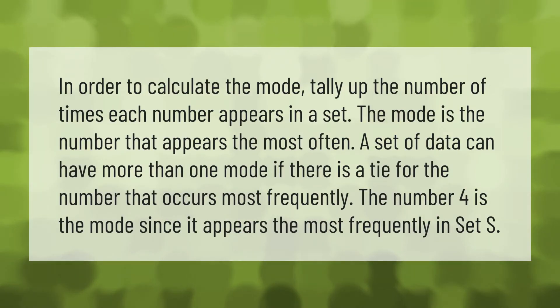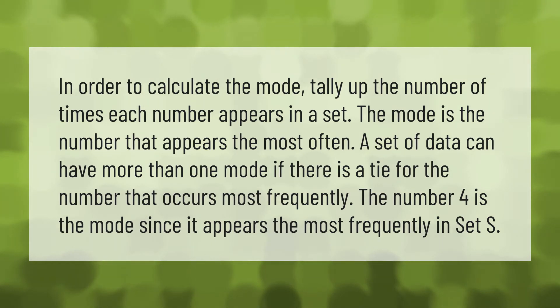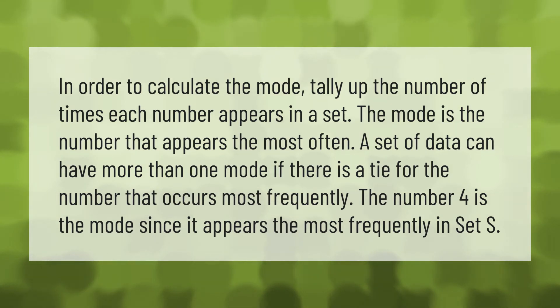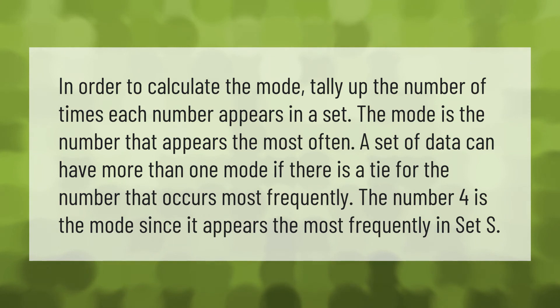To calculate the mode, tally up the number of times each number appears in a set. The mode is the number that appears most often. A set of data can have more than one mode if there is a tie for the number that occurs most frequently. The number four is the mode since it appears the most frequently in set S.